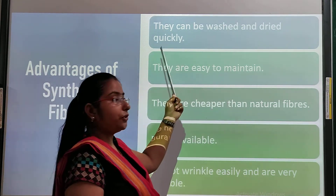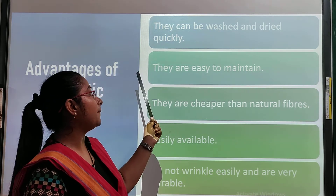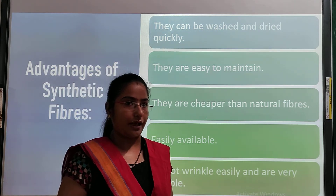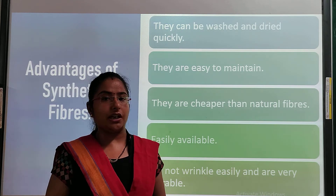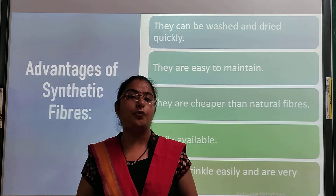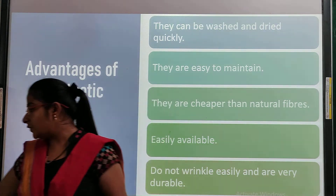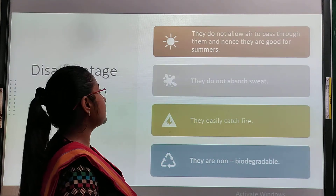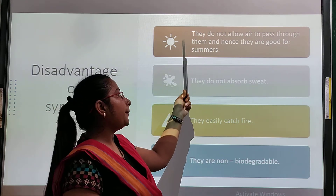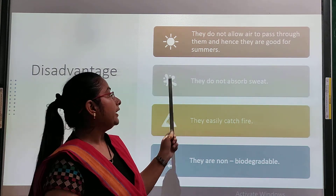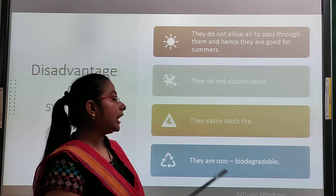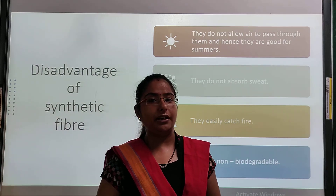The advantages of synthetic fibers are: they can be washed and dried quickly, they are easy to maintain, and they are cheaper than natural fibers and easily available. A disadvantage is that they do not allow air to pass through them, so they are not ideal for summers. They do not absorb sweat well. They easily catch fire and they are non-biodegradable.